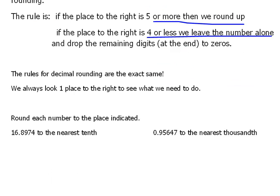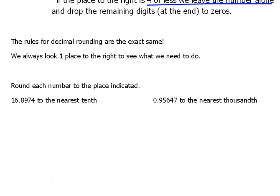So, let's look and see what we're going to do here. Again, place value is going to be crucial. So, this one says, round each number to the place indicated. We're going to round 16 and all of this to the nearest tenth. Well, if we're going to round to the nearest tenth, the tenth position is that first position to the right of the decimal.